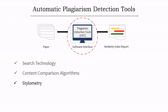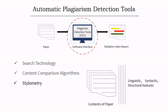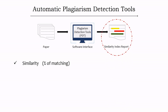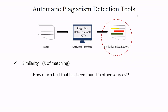Stylometry employs statistical algorithms to analyze the writing style of the submitted paper, including linguistic, syntactic, and structural features. Moving to the third step — the similarity index report — the tool marks plagiarized phrases, words, or sentences and generates a report that highlights content matches, showing the percentage of similarity with other documents and how much text has been found in other sources.